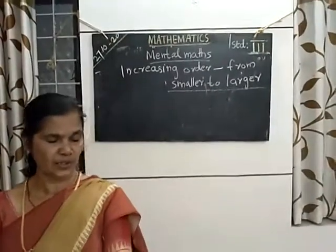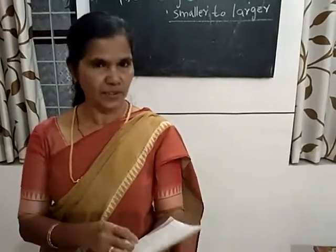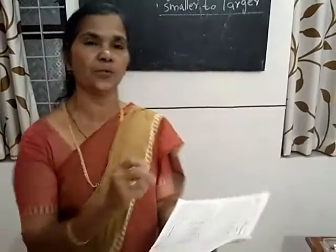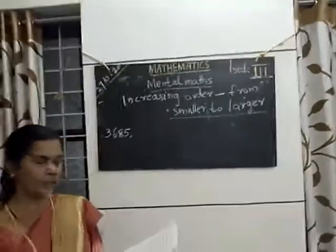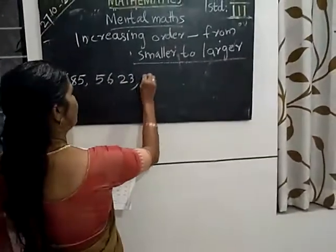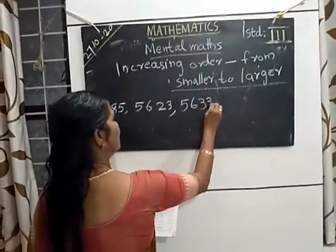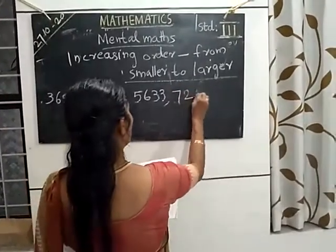First number set: 5,623; 3,685; 7,293; 5,633. Which is the smallest number there? Look at the thousands place — 3,000 is the smallest, so you start from there. 3,685 is the smallest number. Next, which is the next number? 5,623 and 5,633 — which is smaller? 5,623. Then 5,633. Which is the largest number given? 7,293.